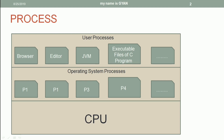There are two types of processes managed by an operating system. The first type is created by the user and used by the user, like a browser, an editor, the JVM virtual machine that is used to execute your program, and executable files created by a C program. These are examples of processes created by users. All processes are managed by the operating system, but there are also processes created by the operating system itself, and users have nothing to do about them.